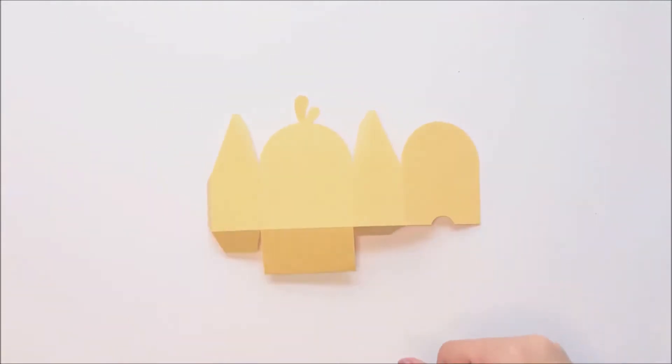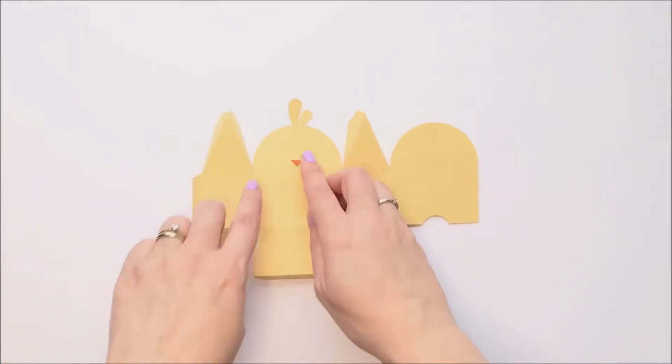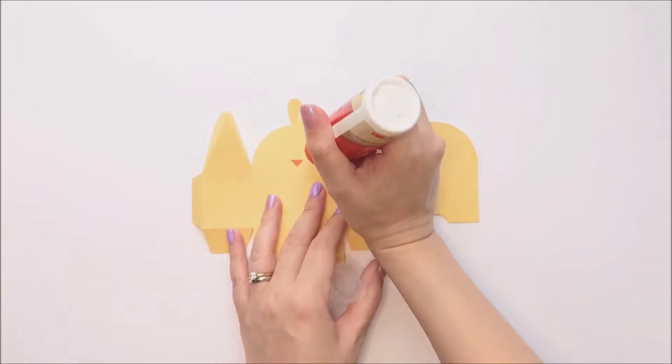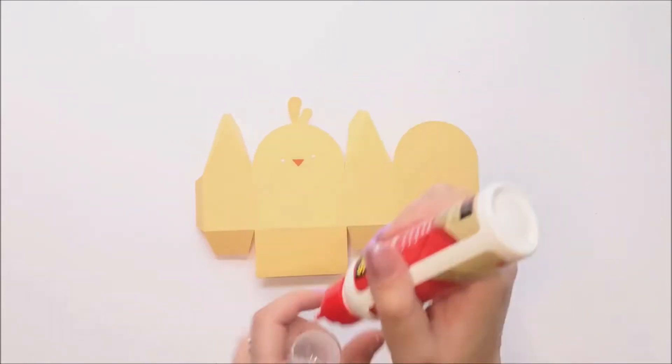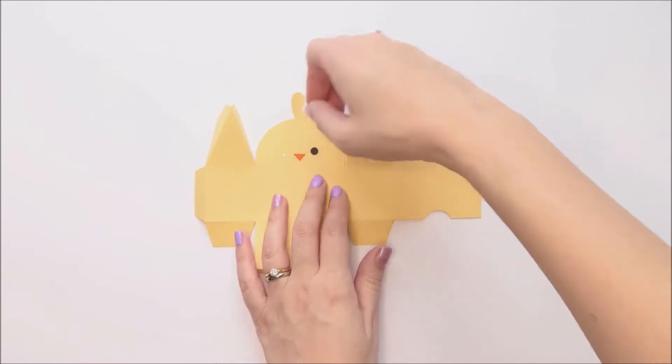Next, onto the front, you're going to glue down your face and feet. I like to start by gluing down the beak first. So you'll just glue down the beak to the center and then you can glue down the eyes to either side. And you just want to try and get those evenly spaced.